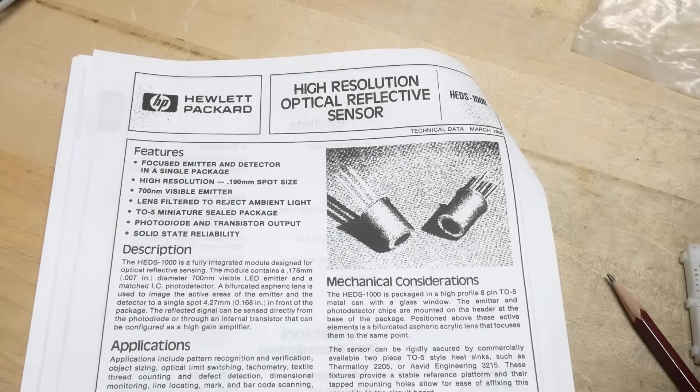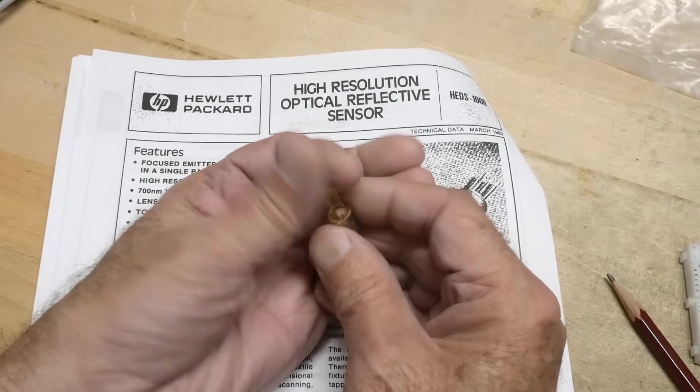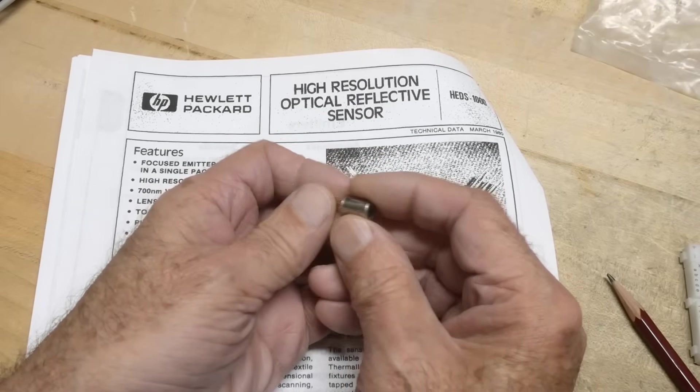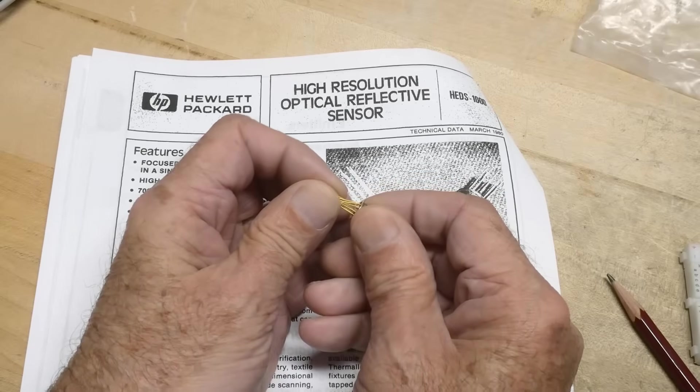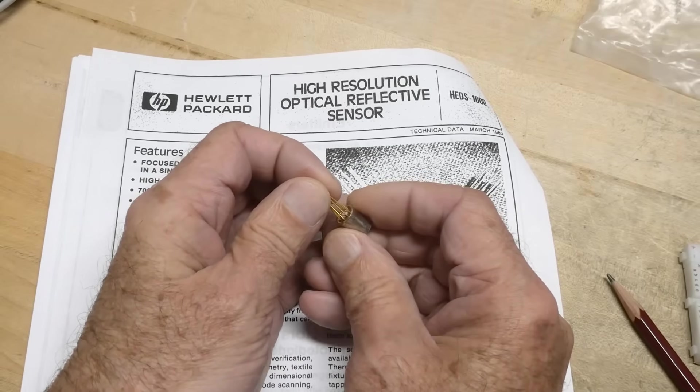It's in this neat can. Let me show you one here. It looks like an op-amp can, only it's really, really long, and it's got a window on it. Let's go ahead and I'll show you some photographs of it up close.